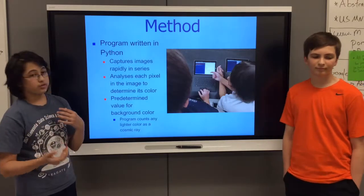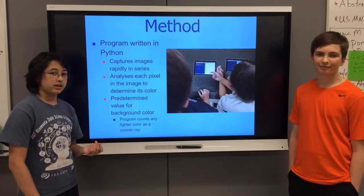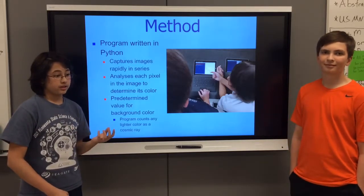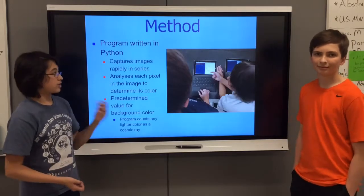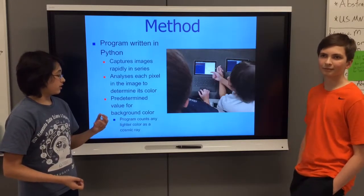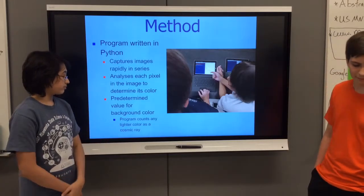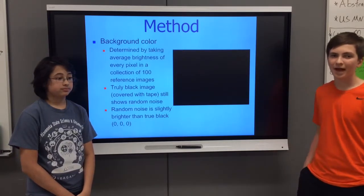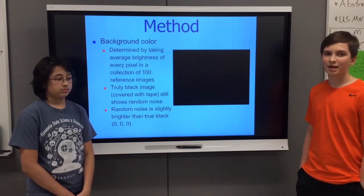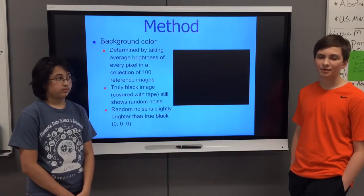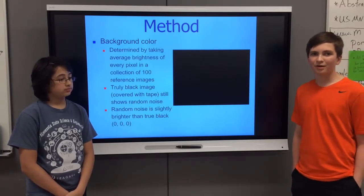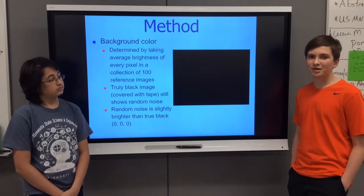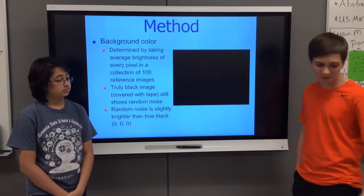Our program was written in Python, and it captures images rapidly in a stream and analyzes each pixel in the image to determine the color. How we determine the color is a predetermined background color, which is determined by taking the average of 100 black images captured with the same webcam and averaging out what the red, green, and blue values were. We put that in as our background color so our computer will know what is a cosmic ray and what isn't.